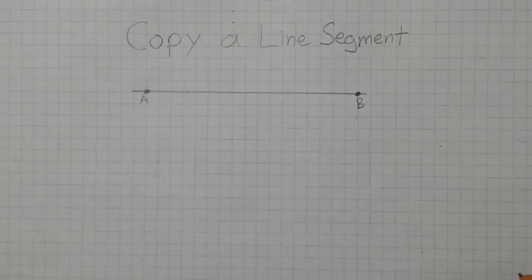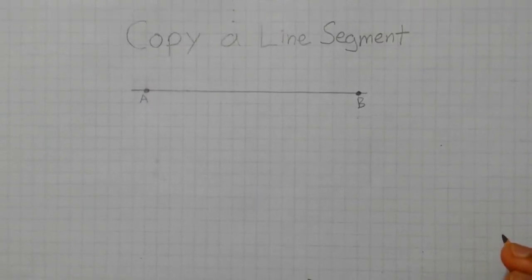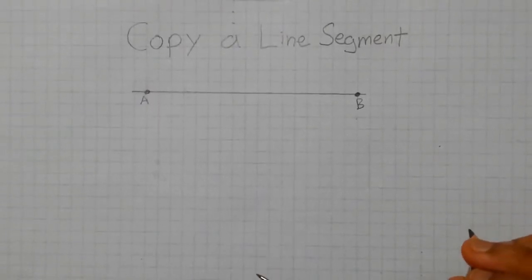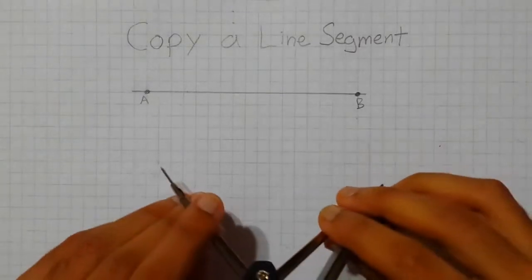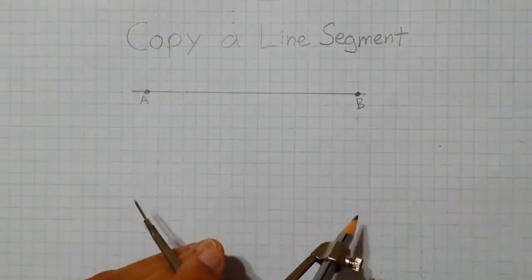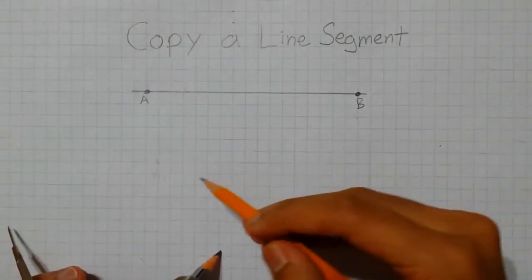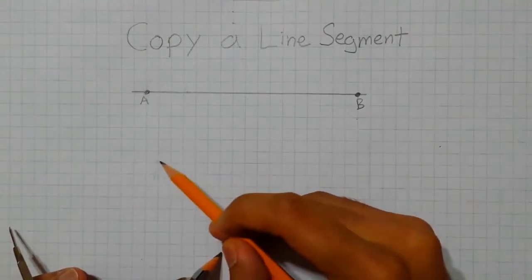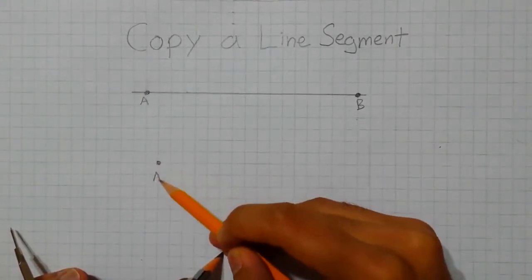The most basic construction is to copy a line segment. We'll take line segment AB first. In order to copy it, we first have to establish where we're going to start our new line. We'll call that point A1.